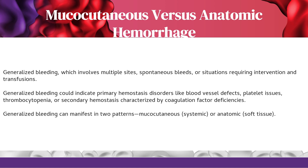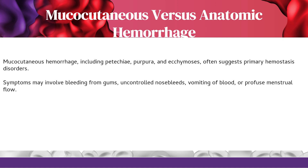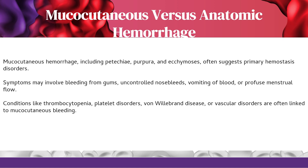Generalized bleeding can manifest in two patterns: mucocutaneous or anatomic soft tissue. Mucocutaneous hemorrhage, including petechiae, purpura, and ecchymosis, often suggests primary hemostasis disorders. Symptoms may involve bleeding from gums, uncontrolled nosebleeds, vomiting of blood, or profuse menstrual flow. Conditions like thrombocytopenia, platelet disorders, von Willebrand disease, or vascular disorders are often linked to mucocutaneous bleeding.